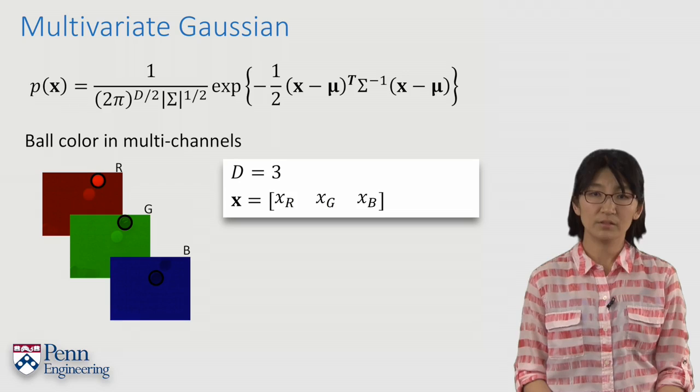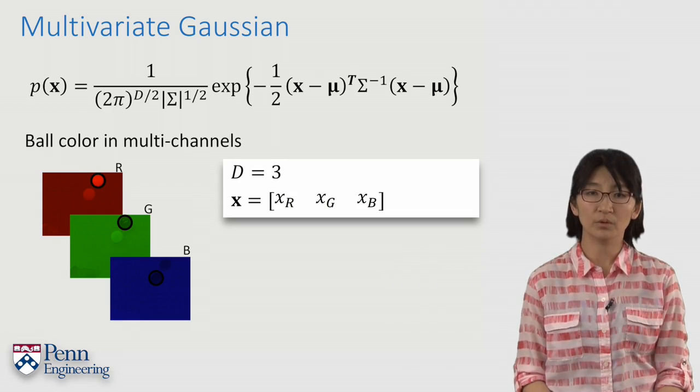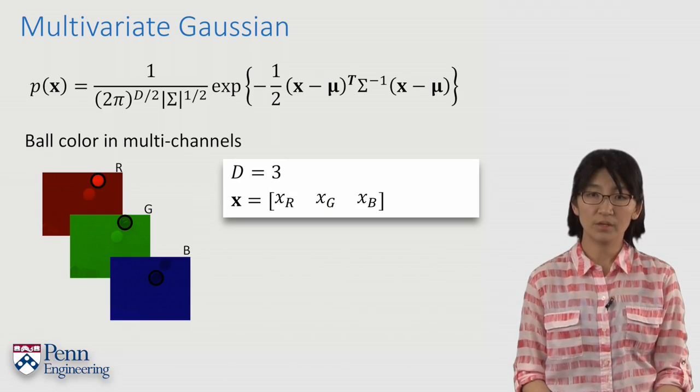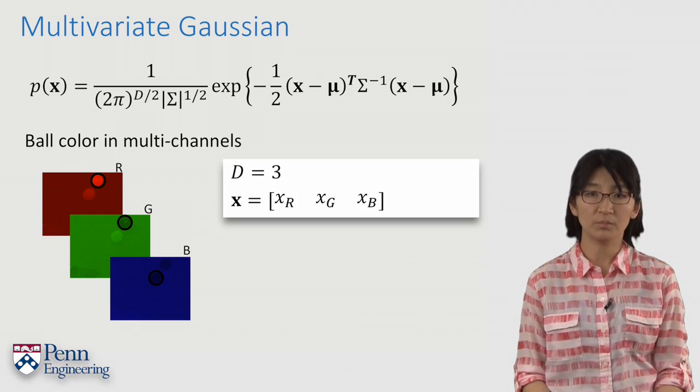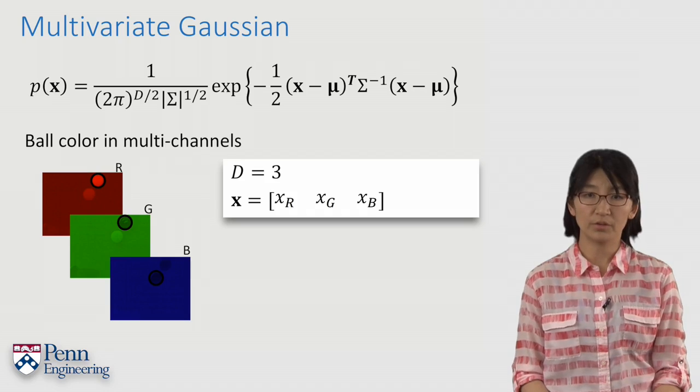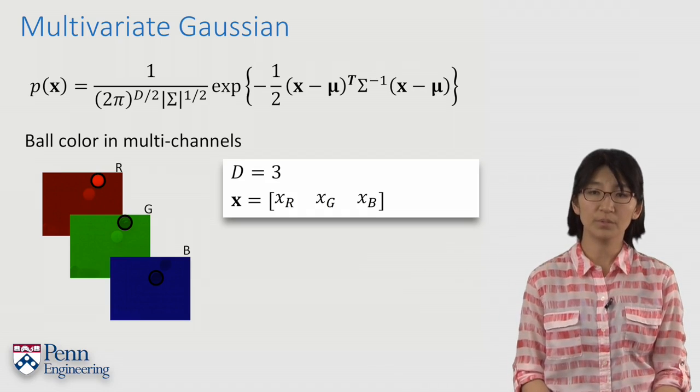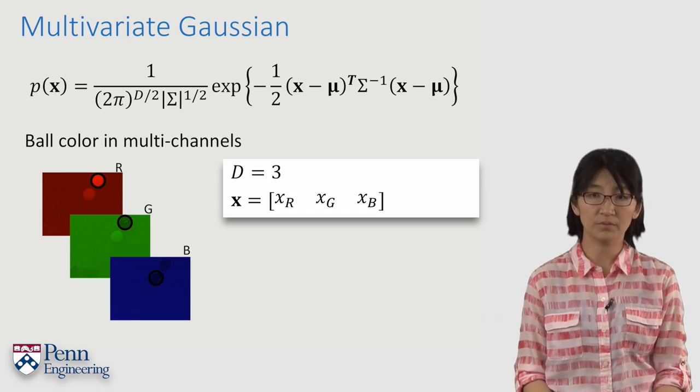Let us consider our example with ball color. We are dealing with 3D variables R, G, B. The variable vector contains our sampled pixels, red, green, and blue values.